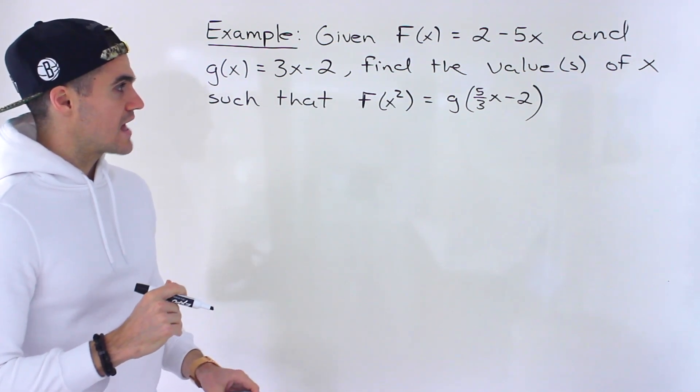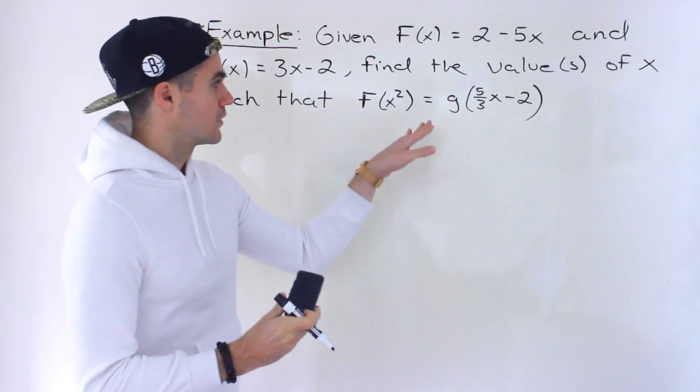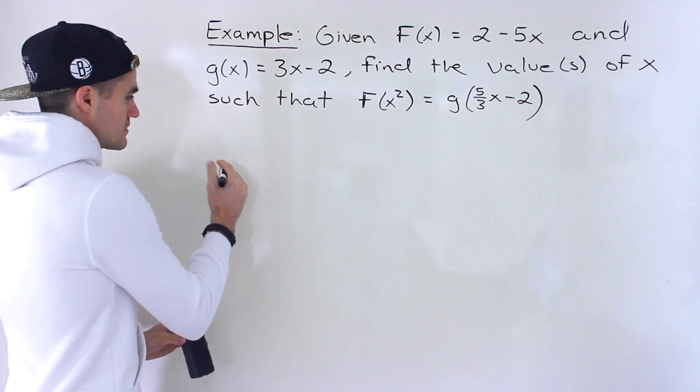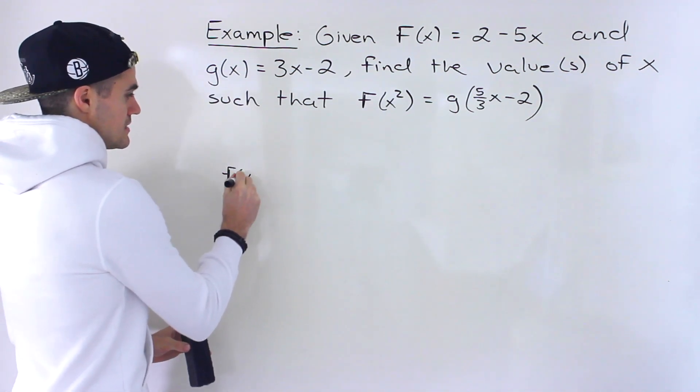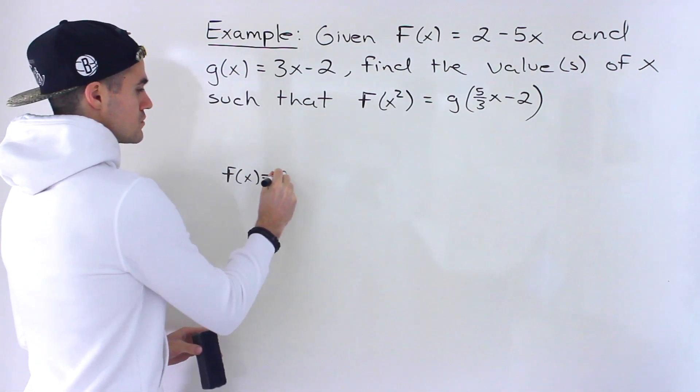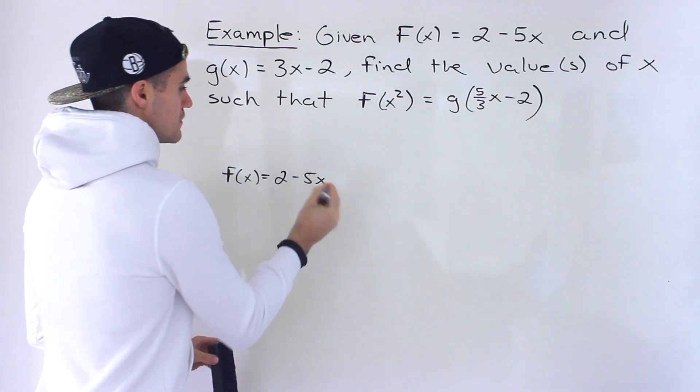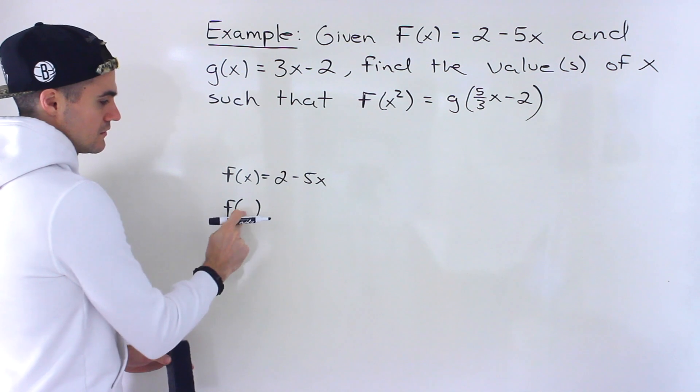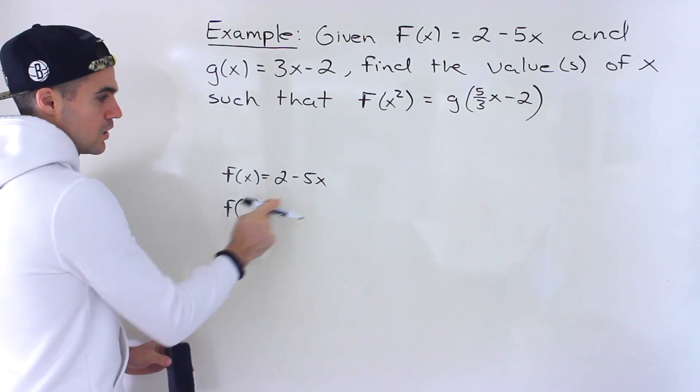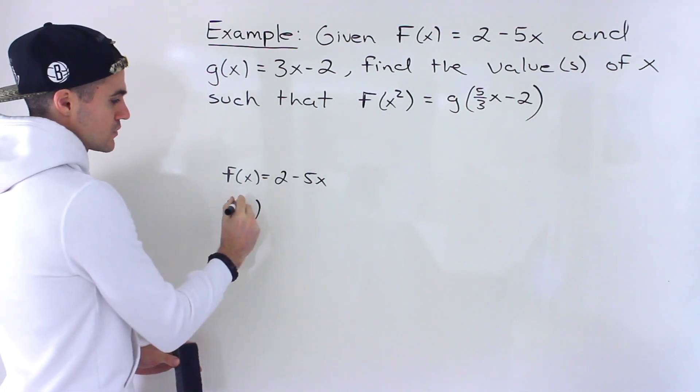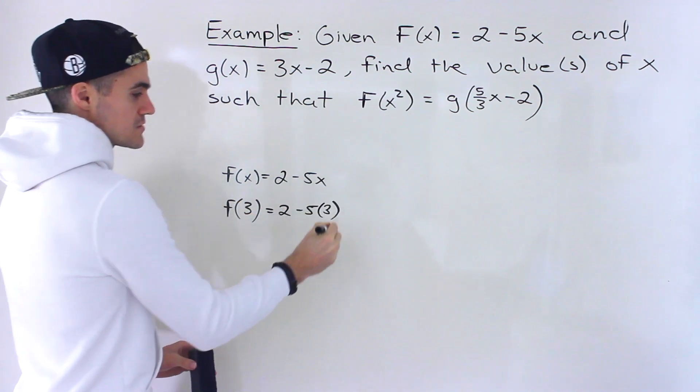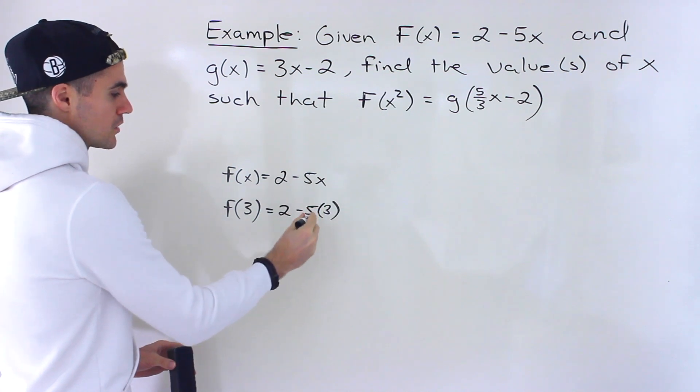So notice that ultimately we're going to be solving an equation right here. We're told that f of x is equal to 2 minus 5x, and so f of anything that we plug in here, we'll have to plug in for this x. For example, if we were finding f of 3, we'd have 2 minus 5 times 3, and then we get a number.